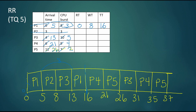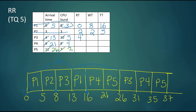P2 arrived at time three and first got on the CPU at time five, so P2's response time was two. P2 was active in the system for a total of five time units, so the wait time is only two time units. P3 arrived at time four and waited four time units to first get the CPU, then P3 was preempted and had to wait 13 more time units, for a total wait time of 17 time units.